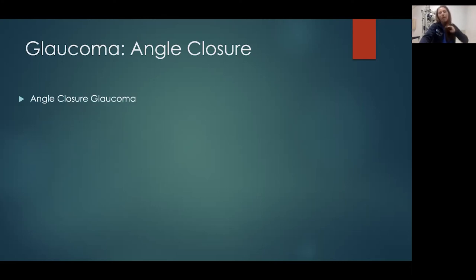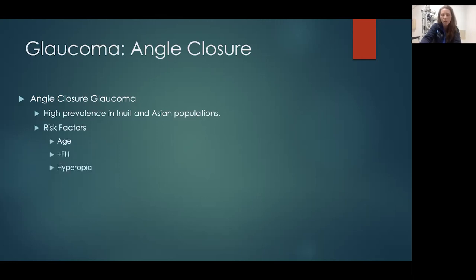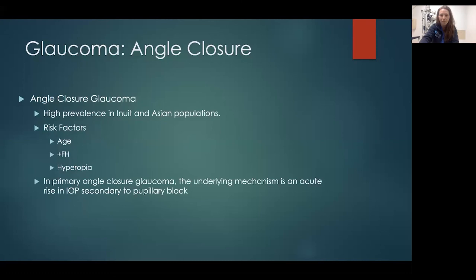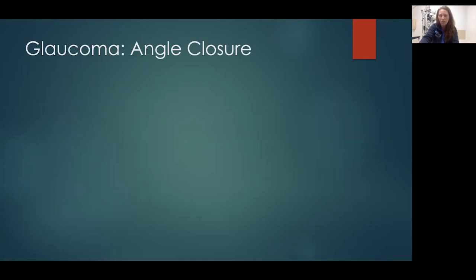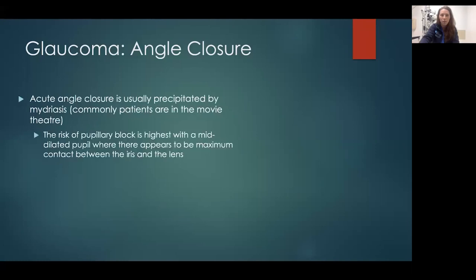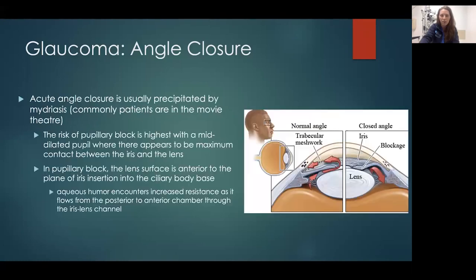Angle closure glaucoma has higher prevalence in Inuit populations from Alaska and in Asian populations. Risk factors include age and hyperopia — small eyes where the drains are more prone to closing off. The primary mechanism is an acute rise in intraocular pressure secondary to pupillary block.